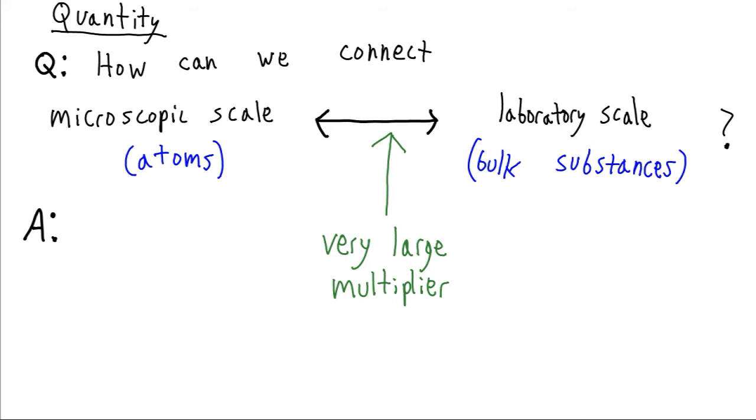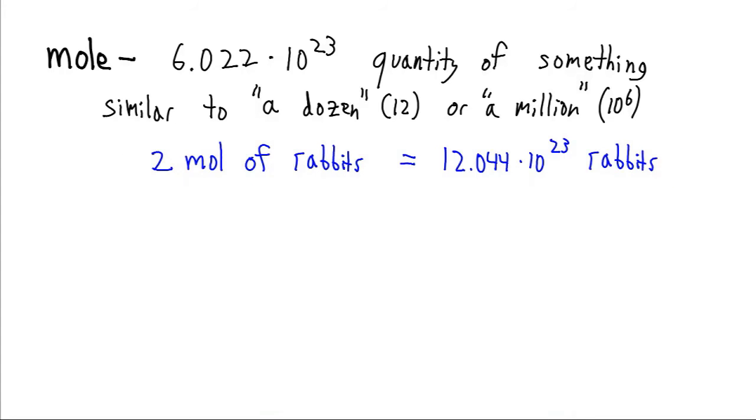So we need a very large multiplier. And so if we take our very small numbers and we multiply them by a very large number, we'll get an ordinary number as the product. So this is a very large number. The quantity is called a mole. It's defined as 6.022 times 10 to the 23, quantity of something. And that something can be anything.